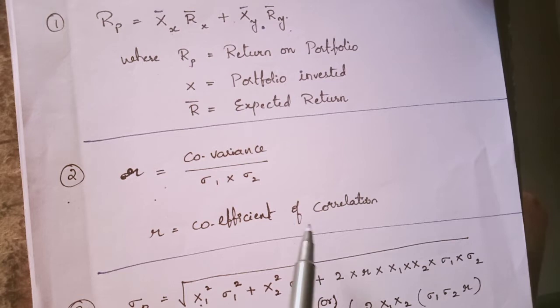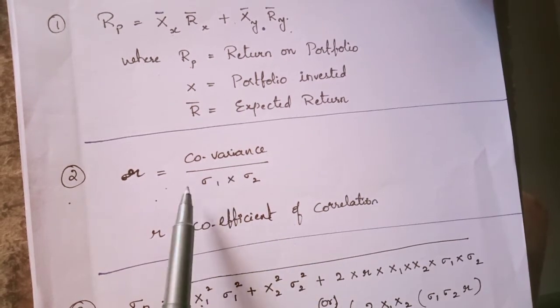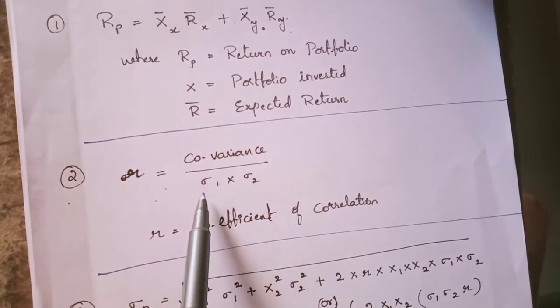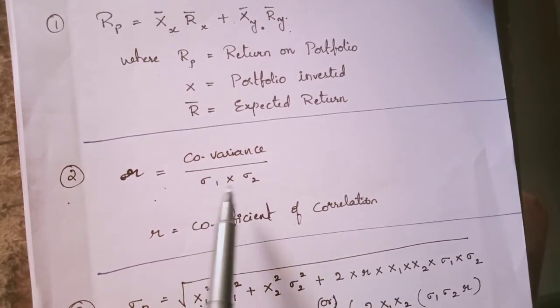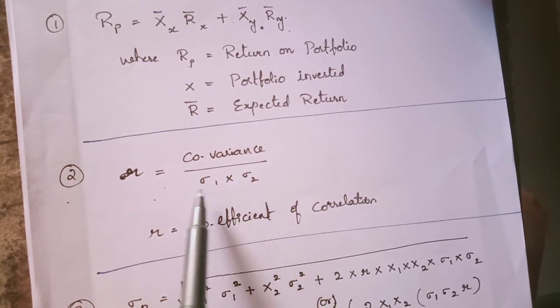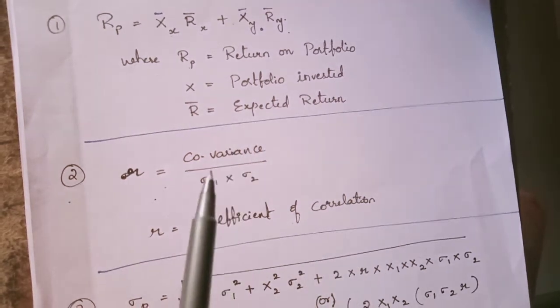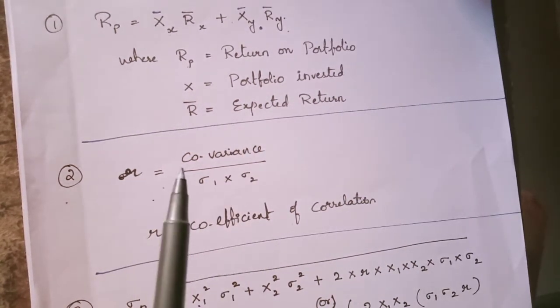Next, r is the coefficient of correlation, which equals covariance divided by standard deviation 1 into standard deviation 2. It is for two assets — you have to keep that in mind, it is for two securities.